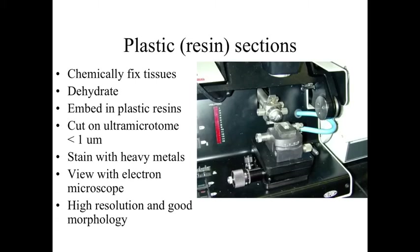Plastic resins are another embedding media, often used for electron microscopy, where we need very, very thin sections — less than a micrometer in thickness, rather than the 5 to 15 micrometers used for light microscopy. These are great for electron microscopy, very good for high resolution and morphology, but they require a lot of time and specialized equipment. We use an ultramicrotome — very fancy, very expensive — but it's essentially the same idea as the deli slicer.